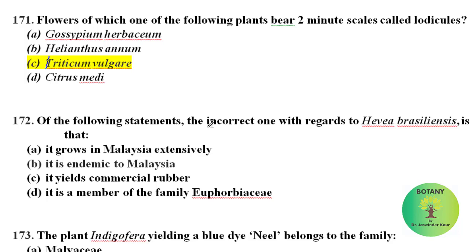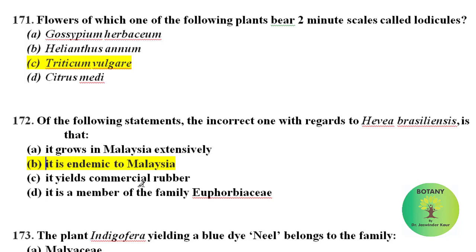Find the incorrect statement with regard to Hevea brasiliensis. 'It grows in Malaysia extensively' — this is correct. 'It is endemic to Malaysia' — this is the incorrect statement, because it is not endemic; it is also present in other parts of the world. 'It yields commercial rubber' — also correct. 'It is a member of family Euphorbiaceae' — also correct.